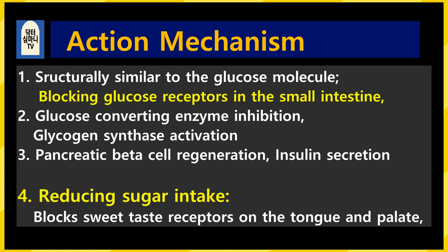Let's look at the mechanisms of treatment. 1. It is a molecule similar to glucose — it blocks glucose receptors in the small intestine, reducing glucose uptake. 2. It inhibits the enzymes that produce glucose, while enzymes for synthesizing glycogen from glucose are activated. Eventually glucose is continually consumed, so blood sugar drops. 3. Regeneration of pancreatic beta cells and stimulation of insulin secretion. 4. On the tongue and palate, it blocks sweet taste receptors — so diabetic patients who crave sweet food find their desire for sweet food reduced.